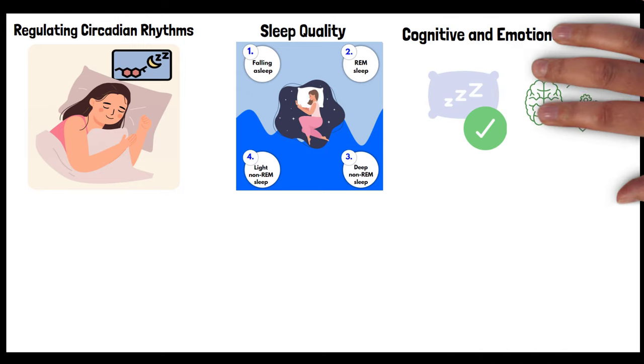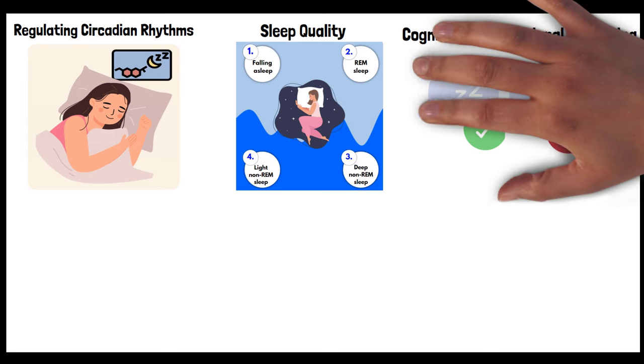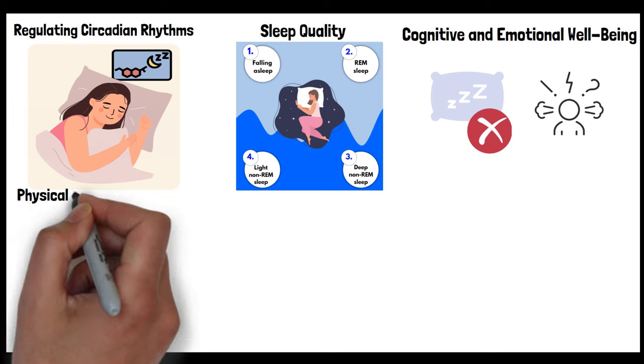Cognitive and emotional well-being: a regular sleep pattern contributes to better cognitive function, including attention, memory, and problem-solving skills. Poor or inconsistent sleep can lead to mood swings and increase stress. Consistency helps regulate mood and reduce symptoms of anxiety and depression.